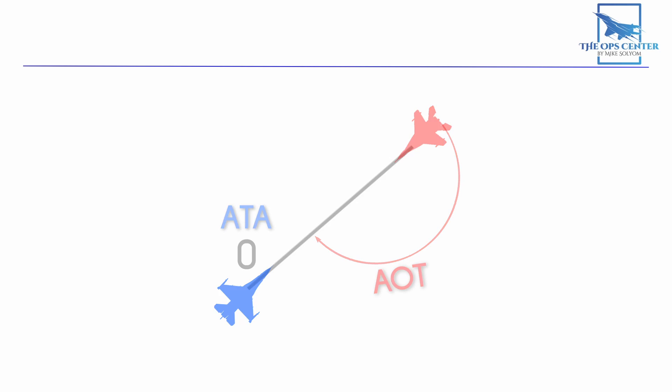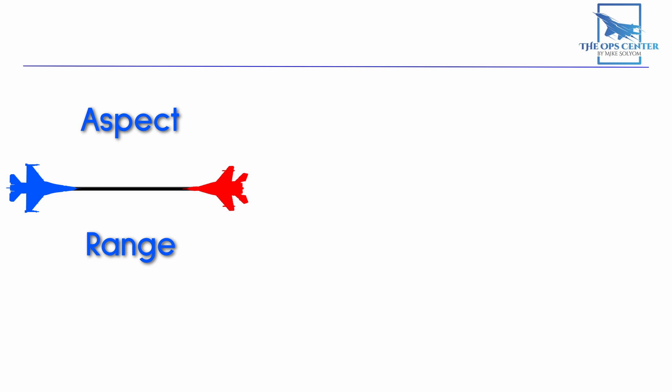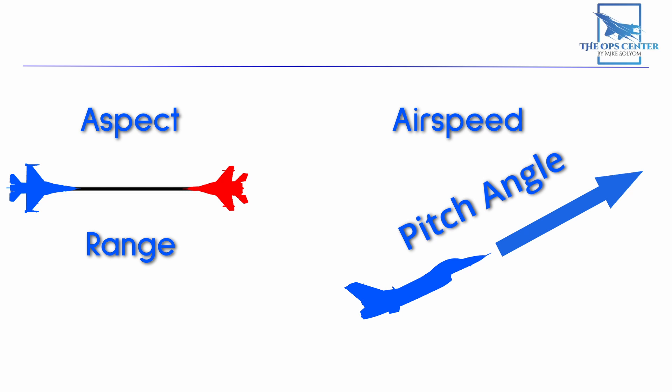So far in this video, we talked about balancing aspect and range to maximize the probability of a kill. We also talked about airspeed and more importantly, pitch angle. Ignoring pitch angle is one of the most common mistakes I see, so make sure to take advantage of that factor.